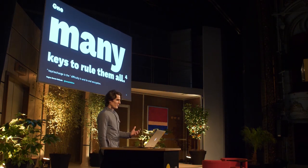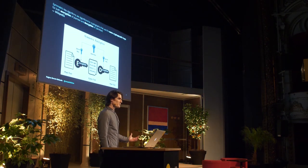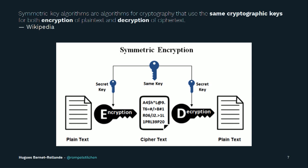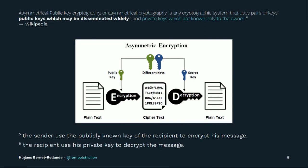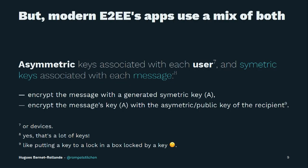It works with a lot of keys. You have symmetric keys where it's basically one key for both encrypting the message and decrypting the message. And you have asymmetrical keys where you have one key to encrypt the message and another one to decrypt the message. In the case of a messaging app, you will have the recipient using the publicly known keys of the recipient to encrypt the message, and then the recipient uses their private key to decrypt the message.